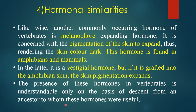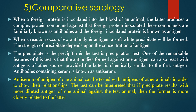The presence of this hormone in vertebrates is understandable only on the basis of descent from an ancestor to whom these hormones were useful. Coming to comparative serology: when a foreign protein is inoculated into the blood of an animal, the latter produces a complex protein compound against the foreign protein — these are known as antibodies, and the foreign protein is known as the antigen. When a reaction occurs between antibody and antigen, a soft white precipitate is formed. The strength of the precipitate depends upon the concentration of antigen, and the test is called the precipitation test.